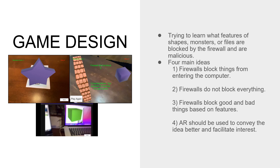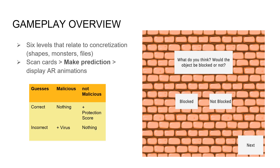The motivation for students is to learn what features of shapes, monsters, or files are blocked by the firewall. The four key ideas are: firewalls block things from entering the computer; firewalls do not block everything; firewalls can block both good and bad things based on features; and AR should be used to spark interest in children. The game has six levels relating to concretization of ideas. Students scan cards, make predictions, and see AR animations play in the real world. If their guess is correct and the object is not malicious, they get a prediction score; if they guess incorrectly and the object is a virus, their virus score increases.